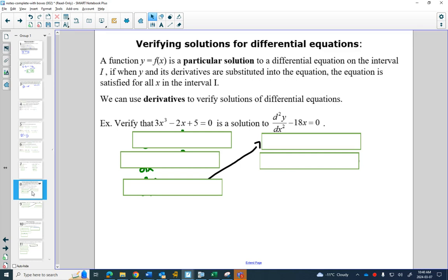We call the working backwards from a differential equation to f of x, a particular solution, on an interval I. So, we can use our derivative to figure this out. So, here we have our differential equation. That differential equation, order 2, degree 1. So, you could have that equation and work backwards.